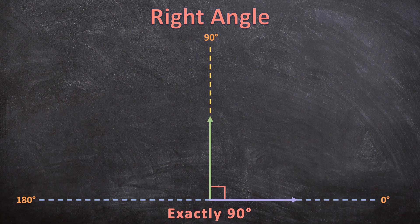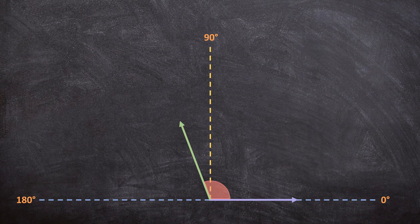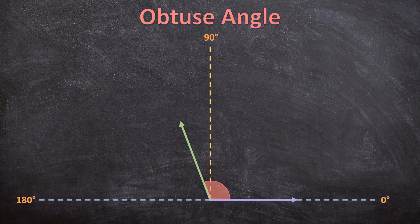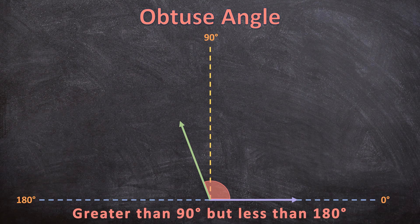Now I take the ray and rotate it further — the angle is now bigger than 90 degrees, and this type of angle is called an obtuse angle. An obtuse angle is between 90 degrees and 180 degrees — bigger than 90 degrees and smaller than 180 degrees. This will also be an obtuse angle.